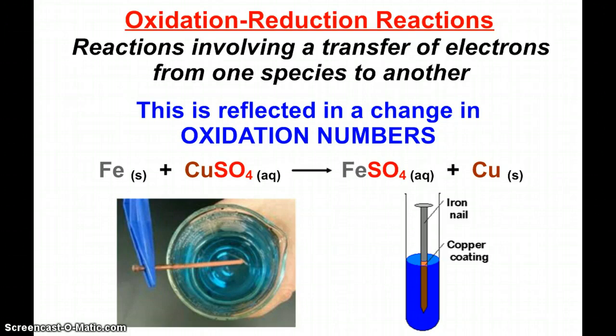So here we see a single replacement reaction. If you take a piece of iron like a nail and put it into copper sulfate, copper 2 sulfate solution, you will start to see copper coat onto the nail. That's a typical single replacement reaction.